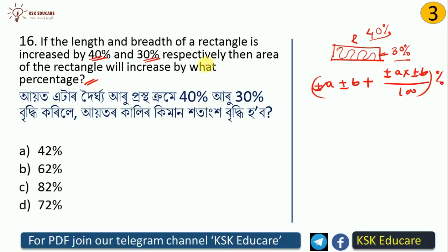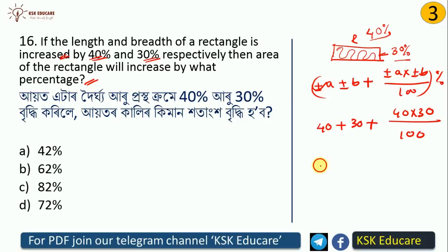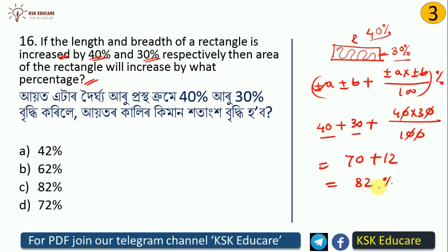Both length and breadth are increased, so we use plus values. Applying the formula: 40 plus 30 plus (40 times 30 divided by 100) equals 70 plus 12 equals 82. So the area increases by 82%. Option C is the correct answer.